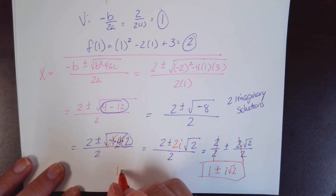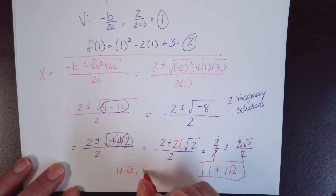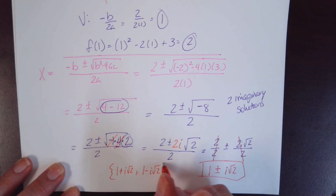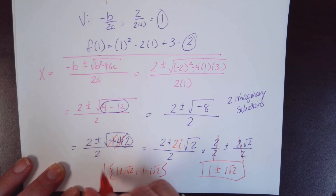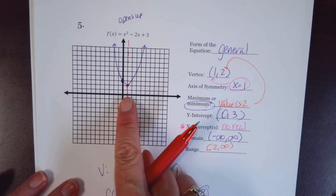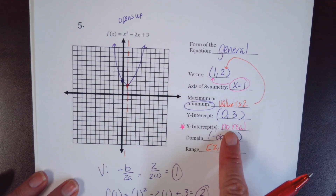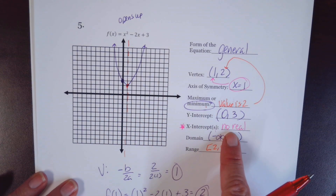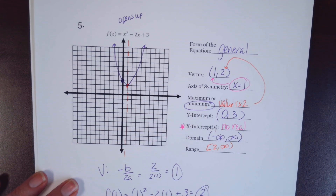Imaginary solutions don't appear on the graph. The line for x-intercepts is not left blank — the answer is that there are no real x-intercepts.